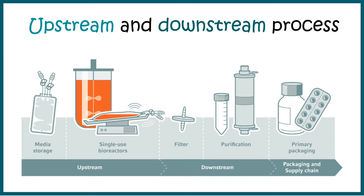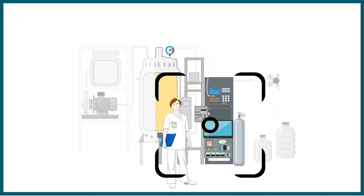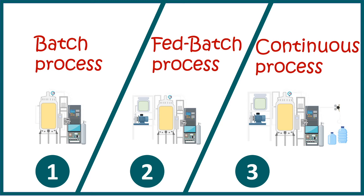In earlier videos we have talked about the upstream and downstream processes, so in case you have missed it, quickly go to that video and revise your concepts — the link is given in the i button. So in this video let's focus on the different types of processes that take place in an industrial setting. The first operation mode we are going to talk about is the batch process, then fed batch and continuous processes.